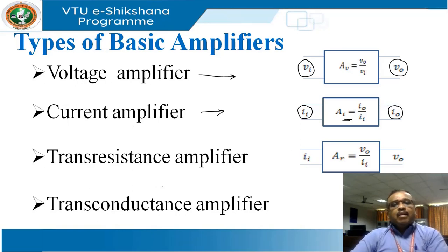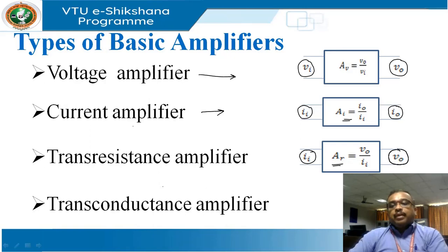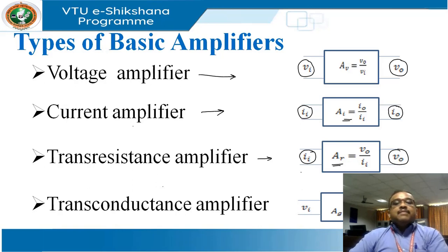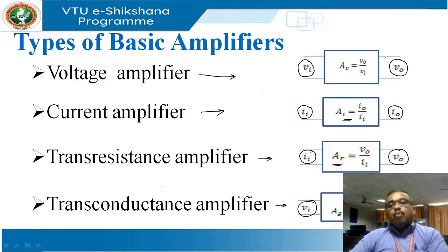In a trans-resistance amplifier, resistance is V/I, so the gain is written as V0 divided by Iin — the input is a current quantity and the output is a voltage quantity. For the trans-conductance amplifier, which is the inverse of resistance, the input is a voltage quantity and the output is a current quantity, and the gain is I0 divided by Vin. In the last two amplifiers, the word 'trans' is used because we relate output voltage or current to input current or voltage respectively.